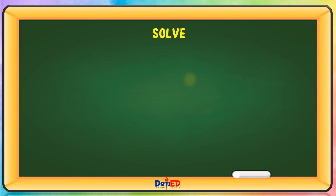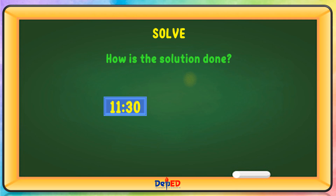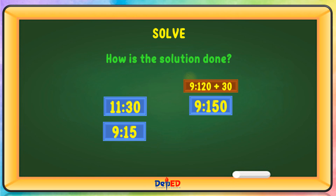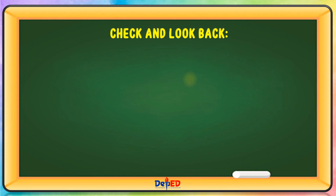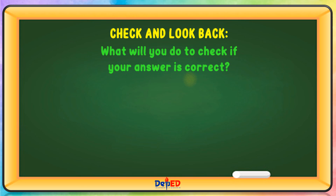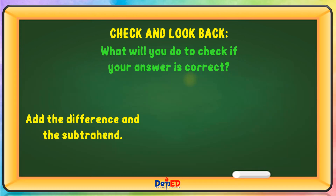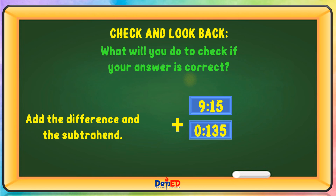Let us solve this. How is the solution done? We have 11:30 and 9:15. 11:30 will become 9:150, since the 2 hours is 120 plus 30, minus 9:15 equals 1:35. Let us check and look back. You need to add the difference and the subtrahend: 9:15 plus 1:35 equals 9:115, and 9:115 equals 11:30.